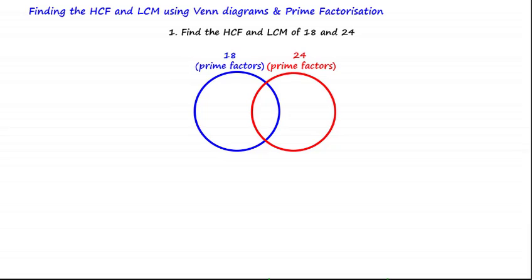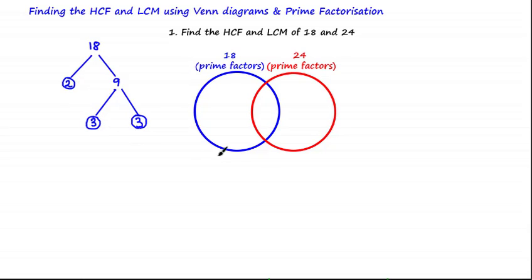Starting with the number 18, we split 18 into a product of 2 and 9. As 9 is not a prime number, we split 9 into a product of 3 and 3. We now have circles on the ends of each branch, which means we've finished the prime factorization. Therefore, we can write 18 as equal to 2 times 3 times 3.